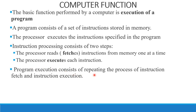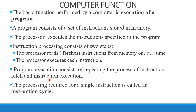Program execution consists of instruction fetch and instruction execution — this is called the full program. Program execution involves repeating the process of instruction fetch and instruction execution. We call this the instruction cycle. An instruction cycle is a single instruction: execute, and all steps in the instruction cycle. Processing required for a single instruction is called an instruction cycle.